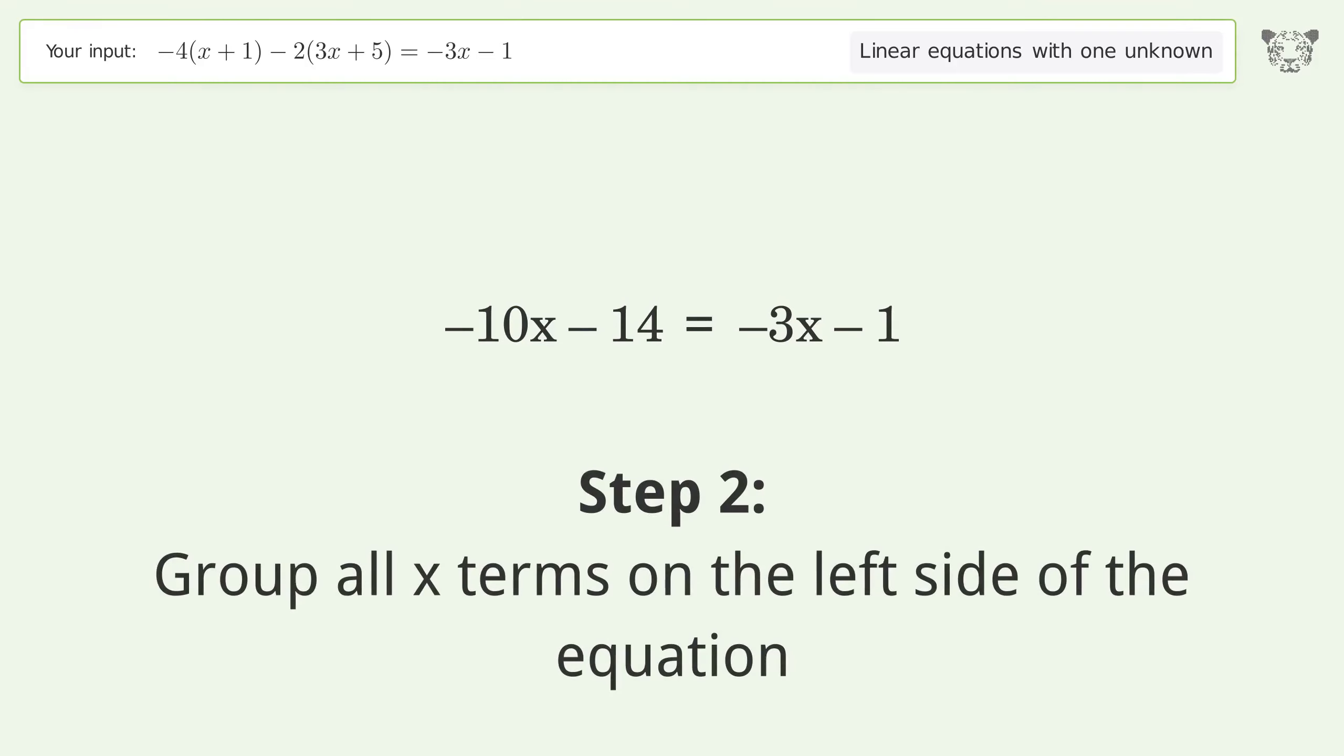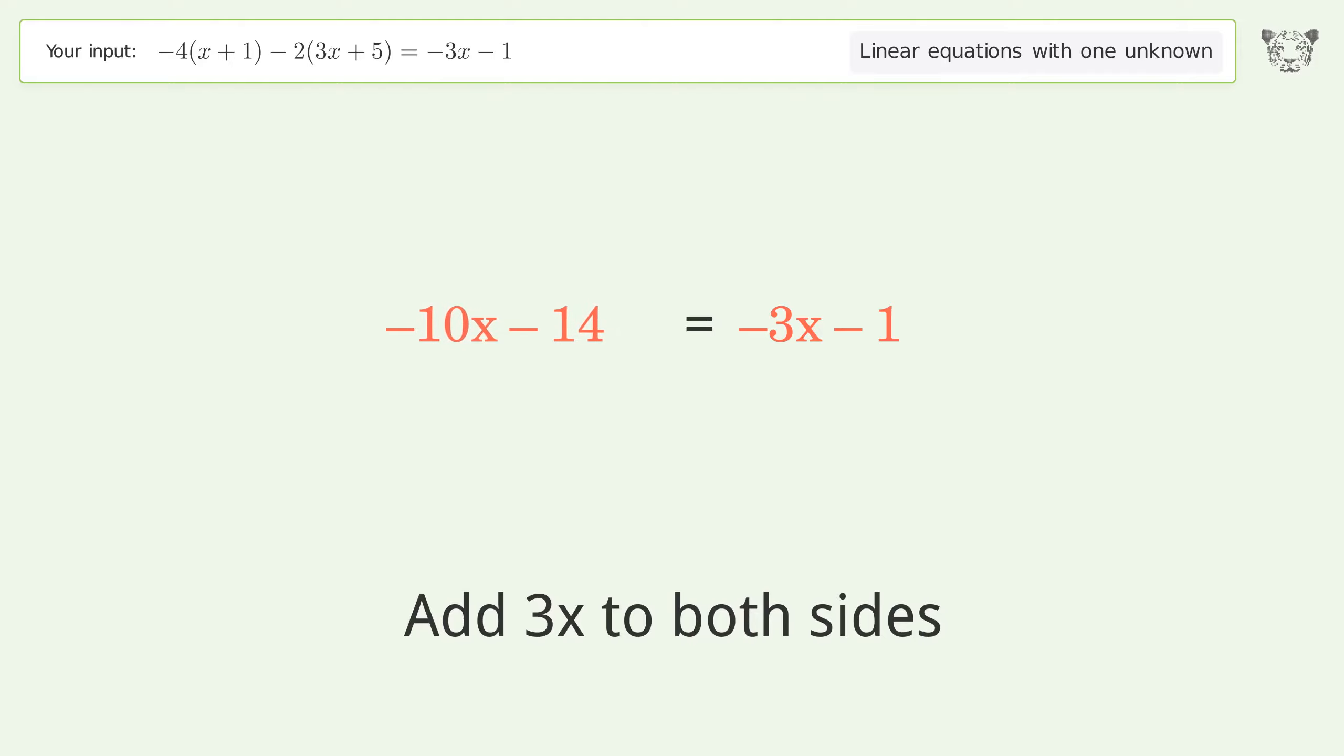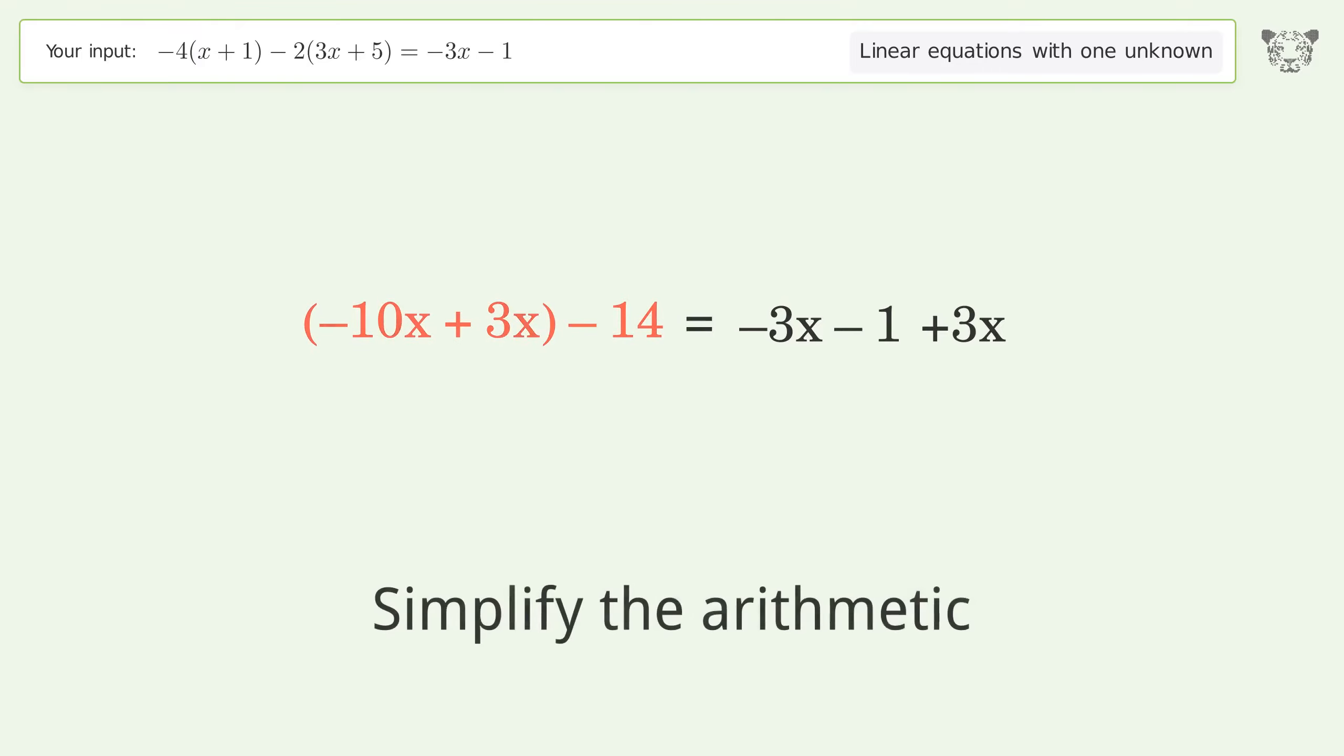Group all x terms on the left side of the equation. Add 3x to both sides. Group like terms. Simplify the arithmetic.